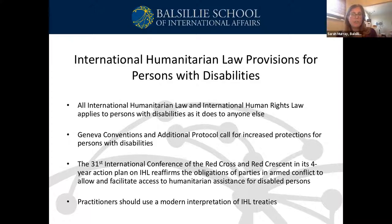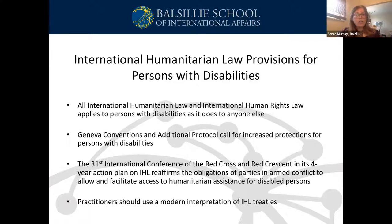Today, practitioners of IHL adopt a human rights-based model of looking at disability and employ a contemporary interpretation of IHL where people with disabilities are seen as agents of their own destiny. Contemporary humanitarian organizations are considering the unique needs of people with disabilities. For example, the 31st International Conference of the Red Cross and Red Crescent reaffirmed the obligation to take the specific needs of people with disabilities into account in the planning, delivery, and monitoring of humanitarian assistance efforts.